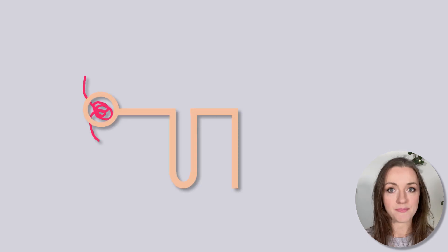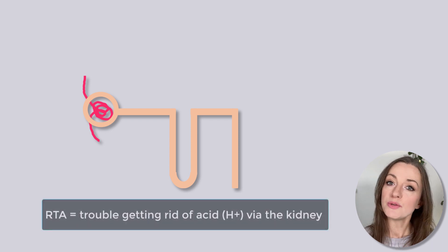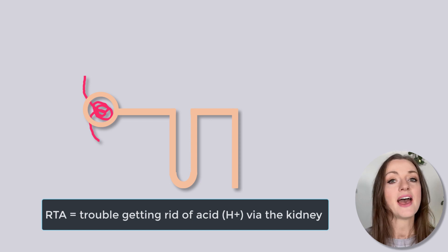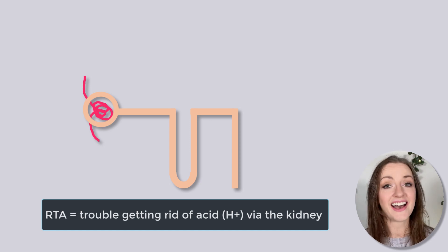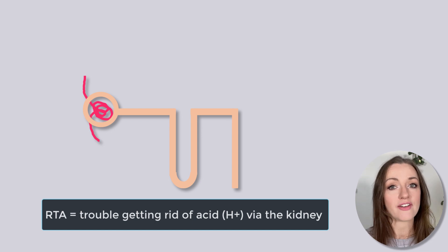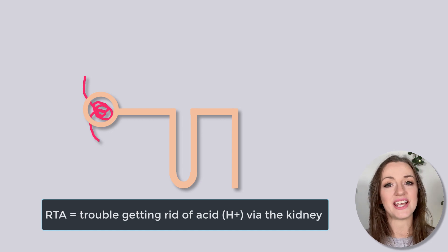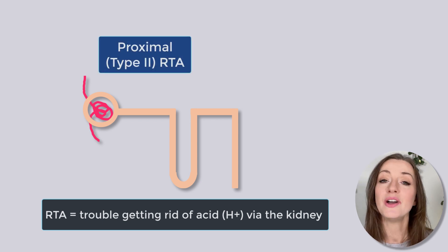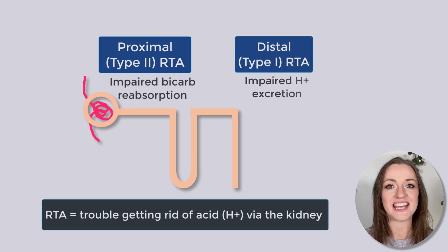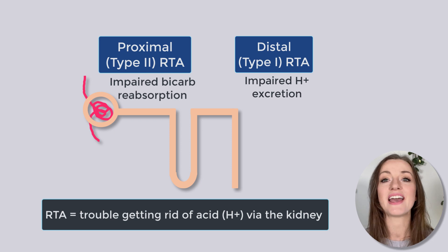The first thing we're going to do is orientate ourselves to the basics of RTA. Renal tubular acidosis is basically when the kidney has trouble getting rid of acid from the body — acid being hydrogen ions in solution. The kidney has three ways to get rid of hydrogen ions, located in different parts of the nephron. In the proximal tubule, this is all about bicarbonate reabsorption. The distal nephron is all about actually getting rid of hydrogen — pumping it out into the tubular lumen, into the urine.